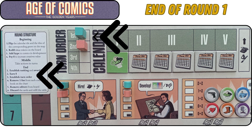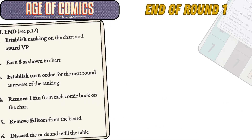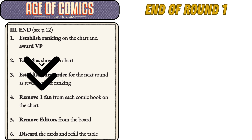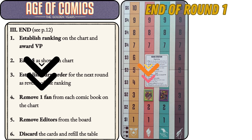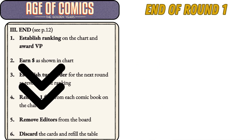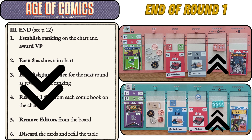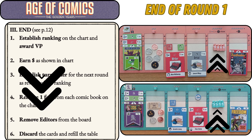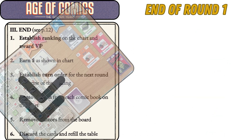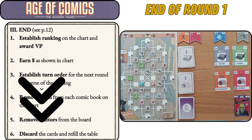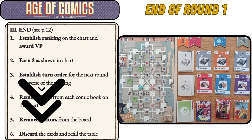Step three: establish turn order, which is the reverse of the turn order from round one. Step four: remove one fan from each comic book on the chart, reflecting declining popularity over time. Step five: remove editors from the board. Step six: discard the cards and refill the table. This is the end of round one.